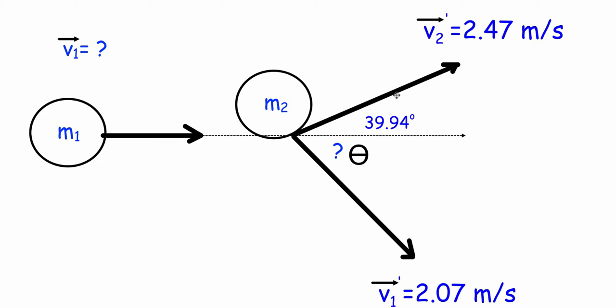After the collision the billiard ball goes up at an angle of 39.94 degrees, has a final velocity of 2.47 meters per second. We know that the cue ball goes down with an unknown angle and has a velocity of 2.07. So the question is, what is the initial velocity of the cue ball?